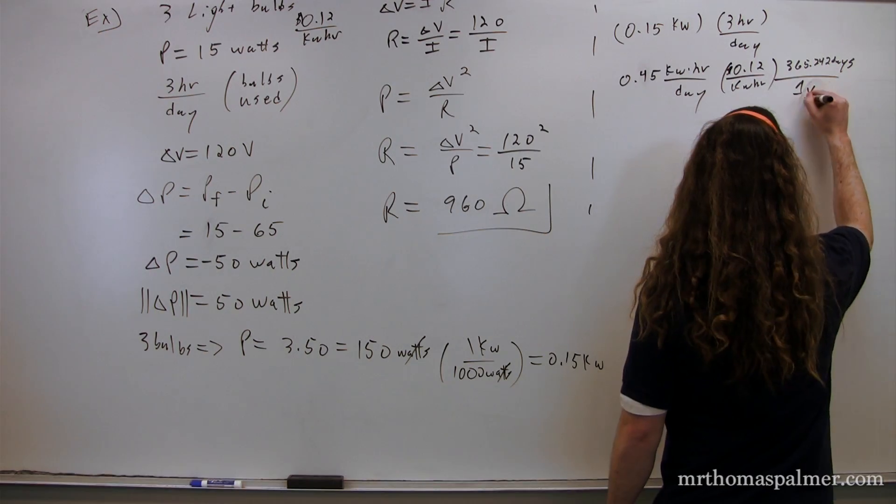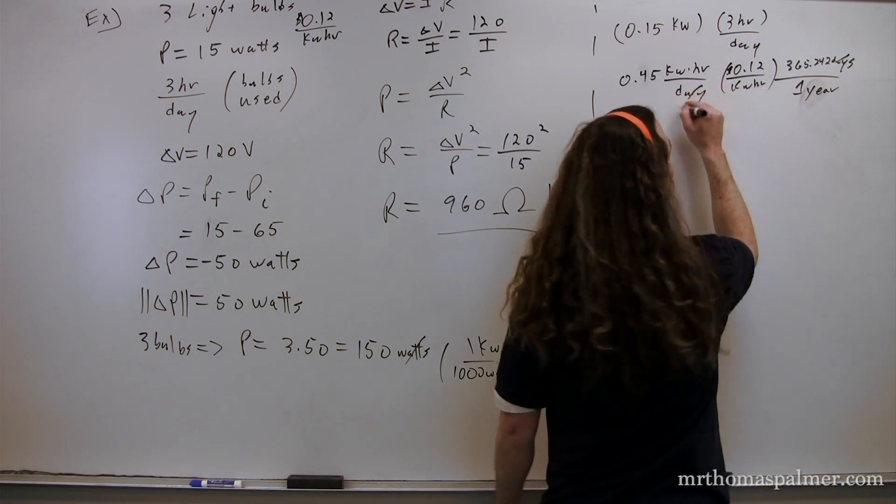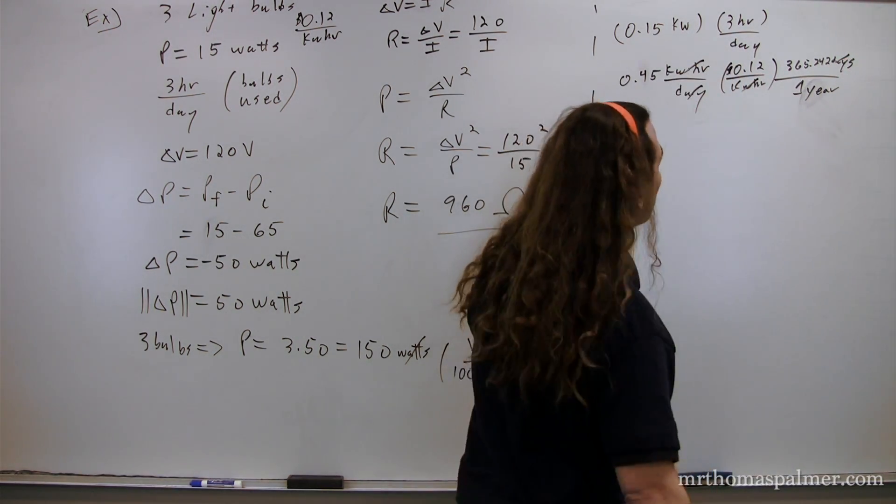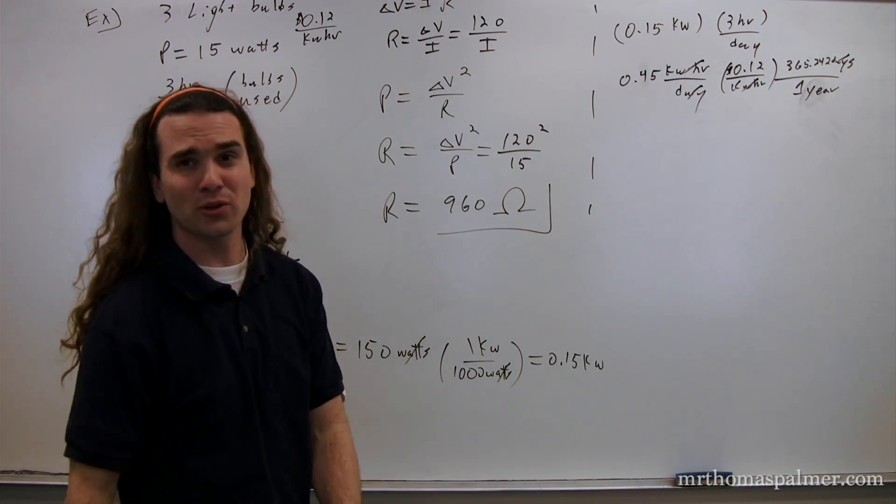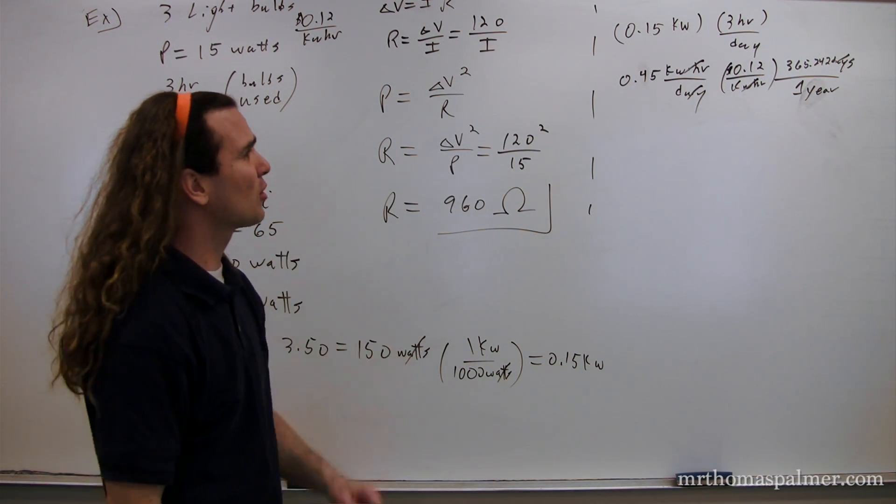So, we're now going to multiply this by our number of days in a year, 365.242 days in a year. Days cancel out. Kilowatt hours cancel out. And we're just left with dollars per year. So, how much we're going to save per year for these? That works out to be 19.723 dollars per year.